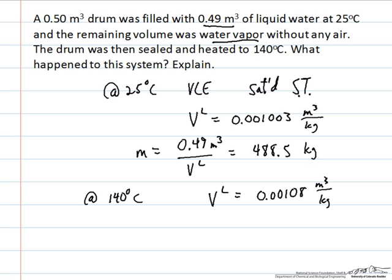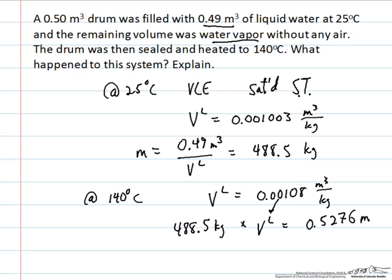We can test whether all of the water ends up as liquid at 140 degrees C. Taking the 488.5 kilograms and multiplying by the liquid specific volume of 0.00108 m³ per kilogram gives a volume of 0.5276 m³, which is greater than the container volume of 0.5 m³. So even if we condense all the water to the denser liquid phase at 140°C, the expanded spacing between molecules means it would exceed the container volume. Any vapor formed — being less dense — would occupy even more than 0.5276 m³.